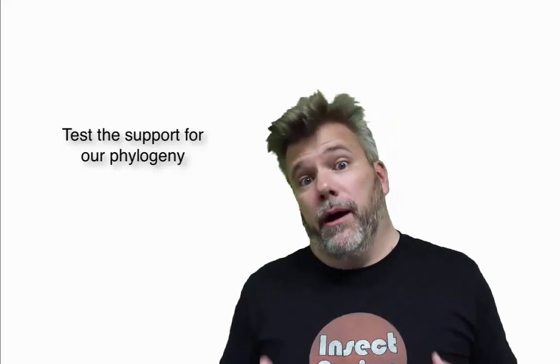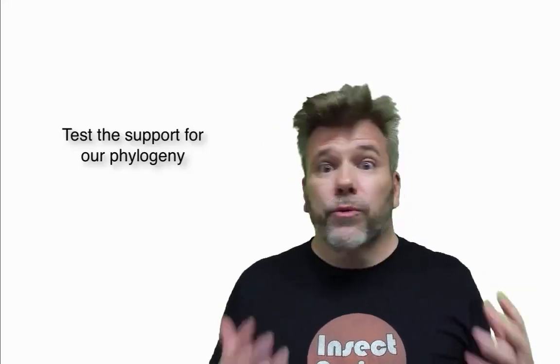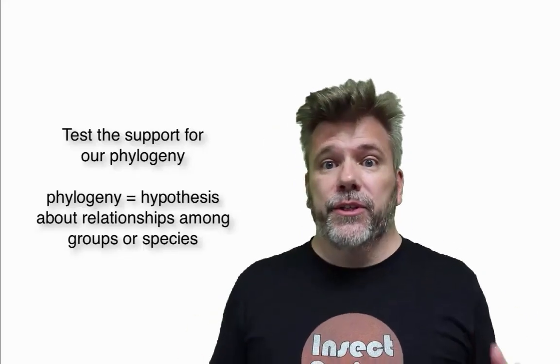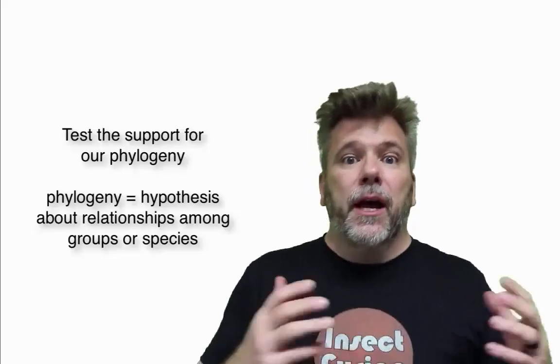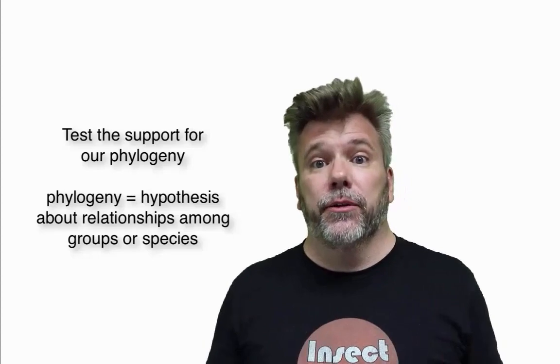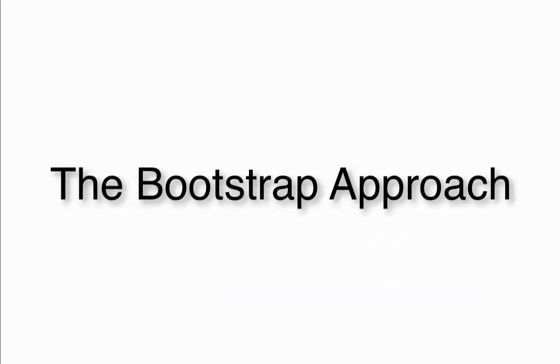The last thing that we need to do is test the support for our hypothesis. Because it's important to remember that our phylogeny that we just made is just a hypothesis about the relationships among these particular groups. One way to test the support for our hypothesis is to do a bootstrap approach, and we can do a simple dice game to show how a bootstrap approach works.